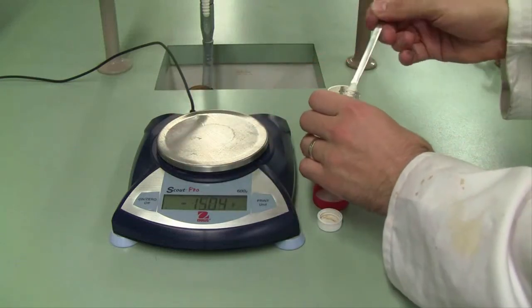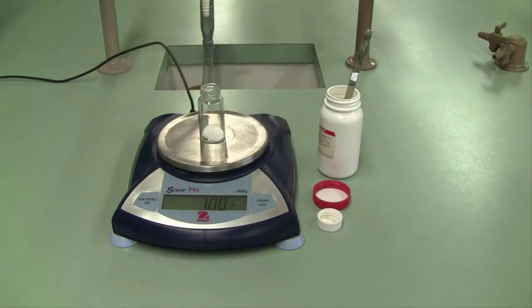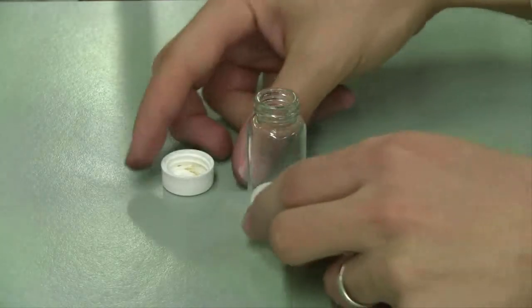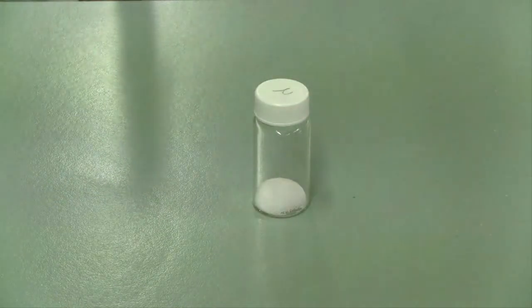It doesn't matter exactly what it is as long as it's somewhere in that window, somewhere between 0.9 and 1 gram. So there we are, lucky this time. Once you've done that, pop the lid on your sample to make sure that you don't get anything unwanted getting in or out of the vial.